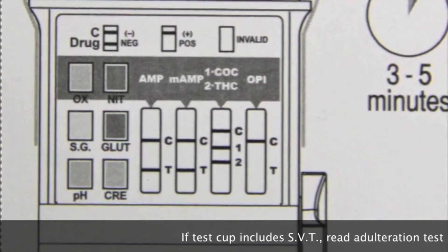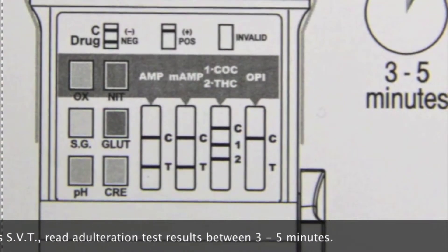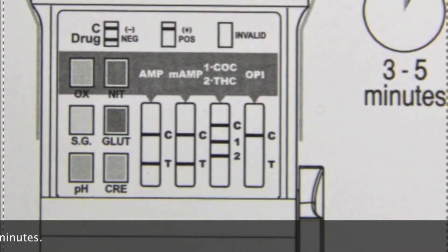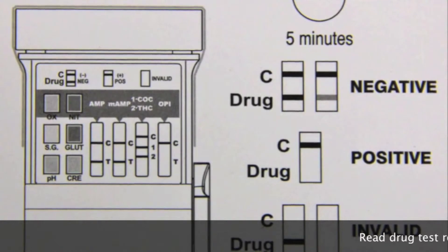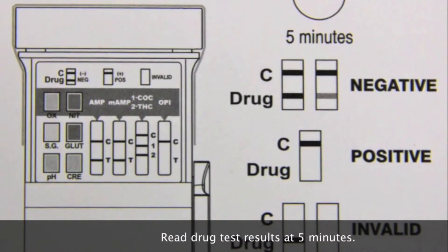If the test cup includes an SVT, you can read the adulteration test results between 3 to 5 minutes. Otherwise, you'll have to wait 5 minutes before you can read the drug testing results.